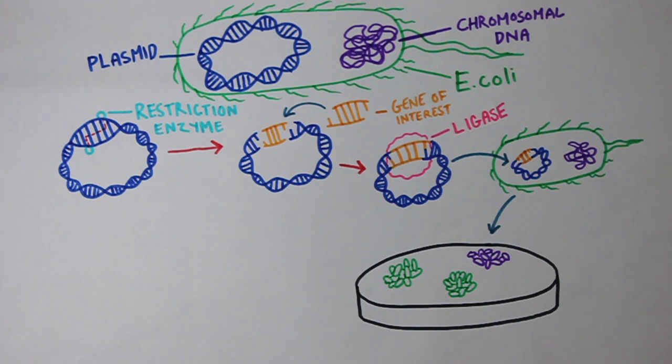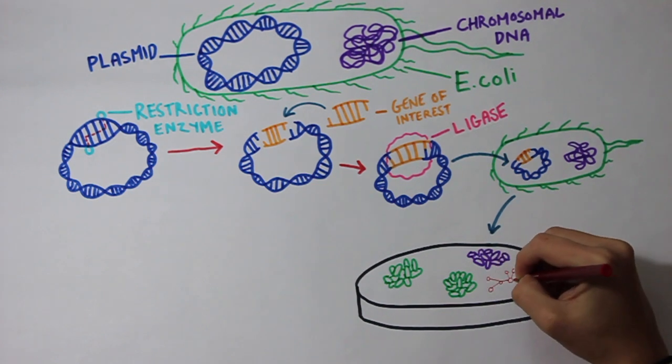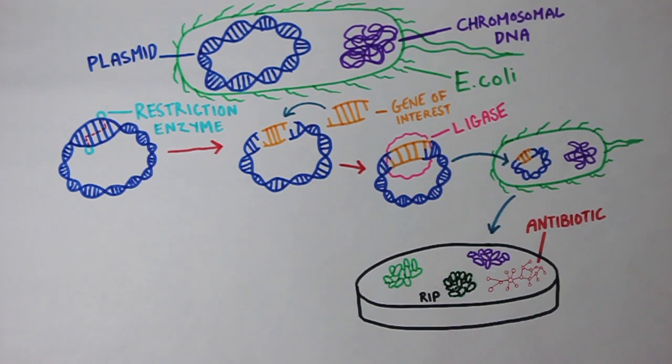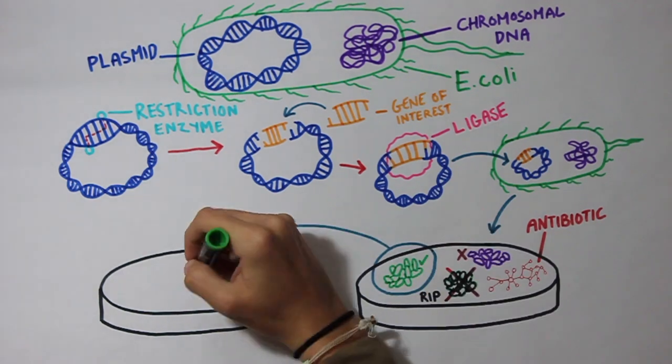This can be done based on specific phenotypic characteristics such as colony color or ability to grow in the presence of an antibiotic. After choosing the correct colony, you can make high quantities of it.